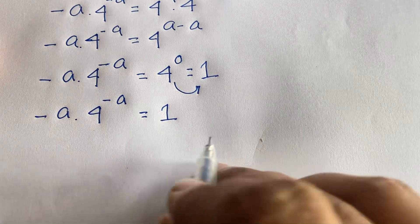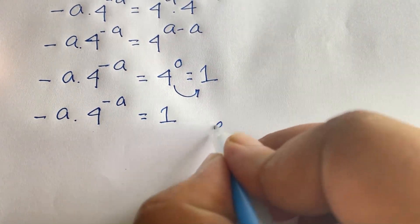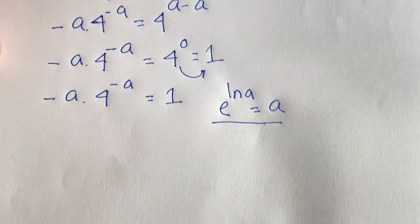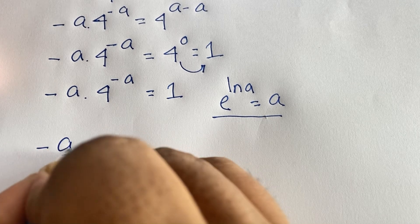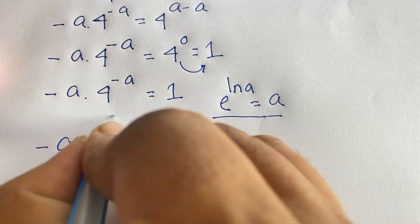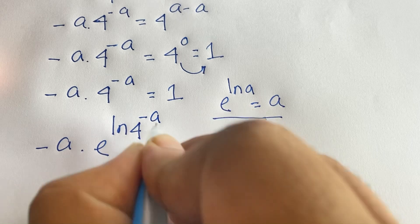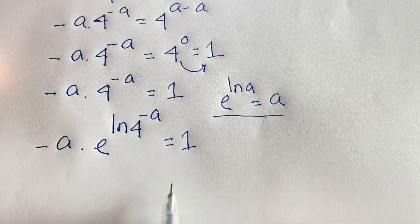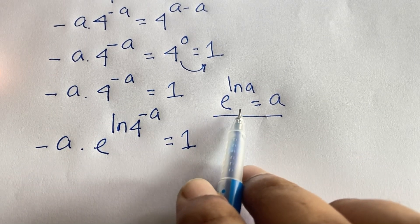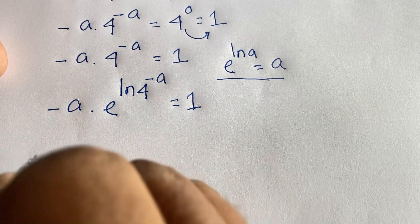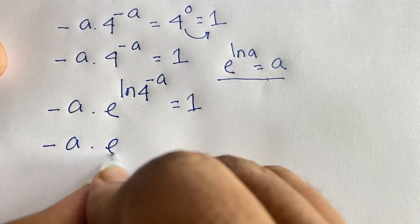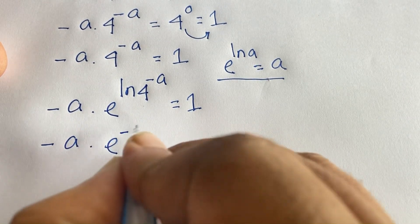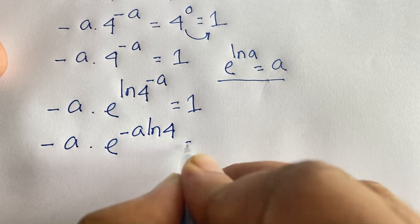Using the identity e to the power ln(a) equals a, we rewrite 4 to the power minus a as e to the power ln(4) times minus a. Applying the logarithm power rule, the exponent minus a moves in front, so minus a times e to the power minus a ln 4 equals 1.